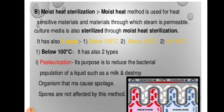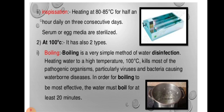Moist heat sterilization has three types: below 100 degrees centigrade, at 100 degrees centigrade, and above 100 degrees centigrade. Below 100 degrees centigrade, it has two types. One is pasteurization, in which the bacterial population of liquids like milk is reduced by applying less heat. A temperature of 72 degrees centigrade is used in pasteurization. In this method, only vegetative cells are destroyed; spores are not affected. The second method is inspissation, where temperature of 80 to 85 degrees centigrade is applied for half an hour daily on three consecutive days. Media containing serum or egg media are sterilized by this method.